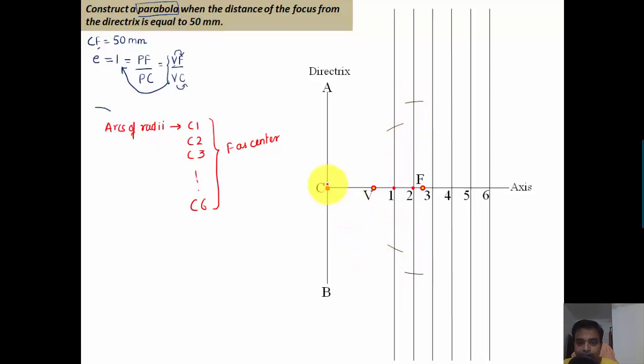Repeat the same for C3 with F as the center, cut an arc above and below. Then with C4 as the radius and F as center, cut an arc above and one below. With C5 as the radius with F as center, cut an arc above and below. With C6 as the radius with F as center, cut an arc above and below.